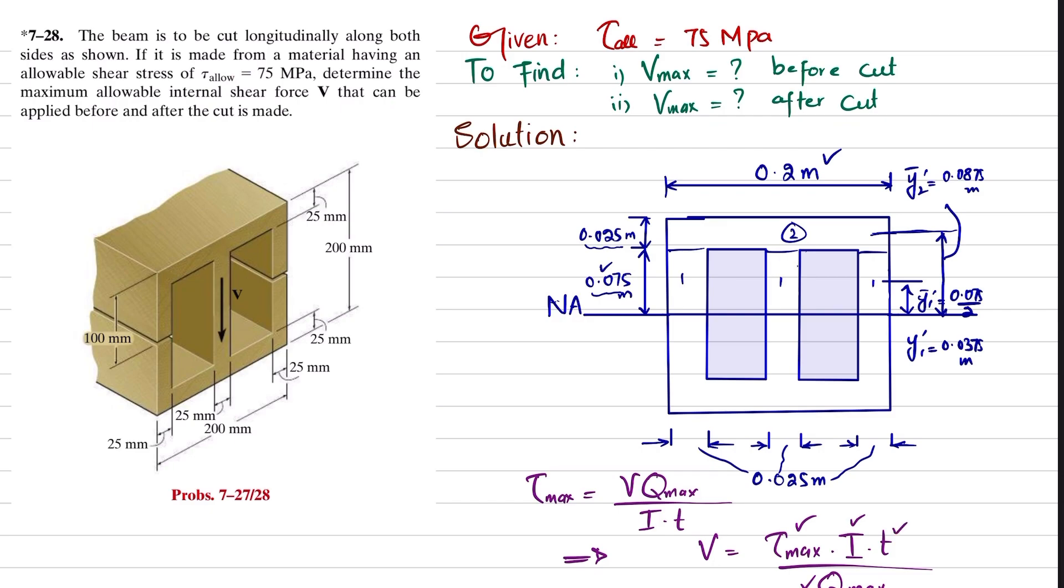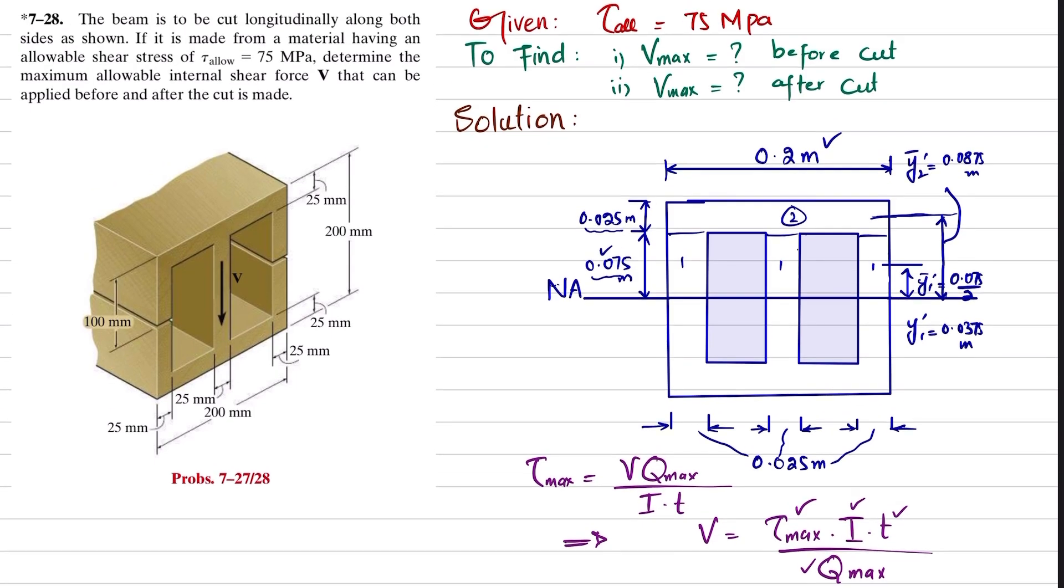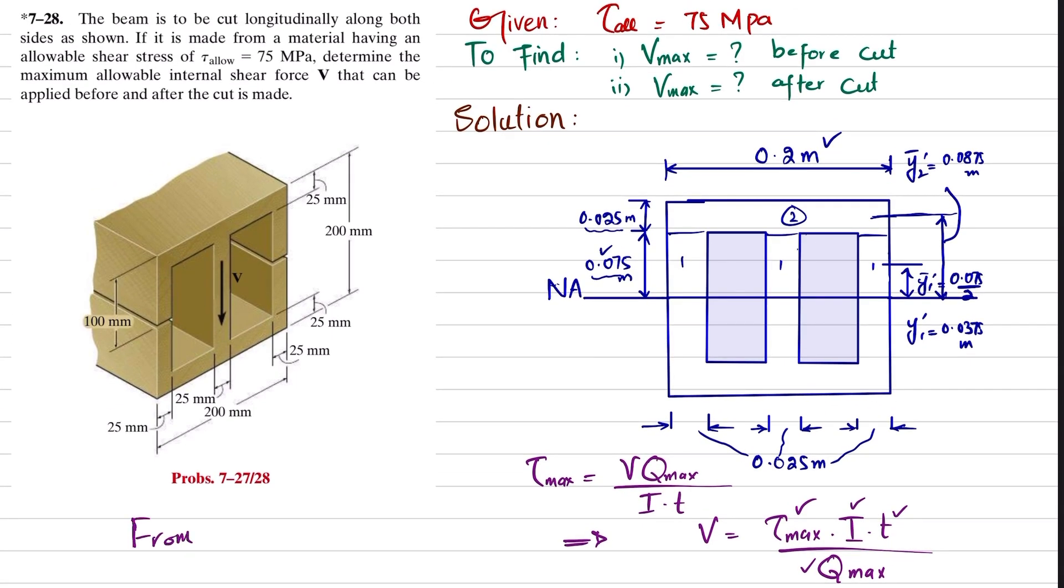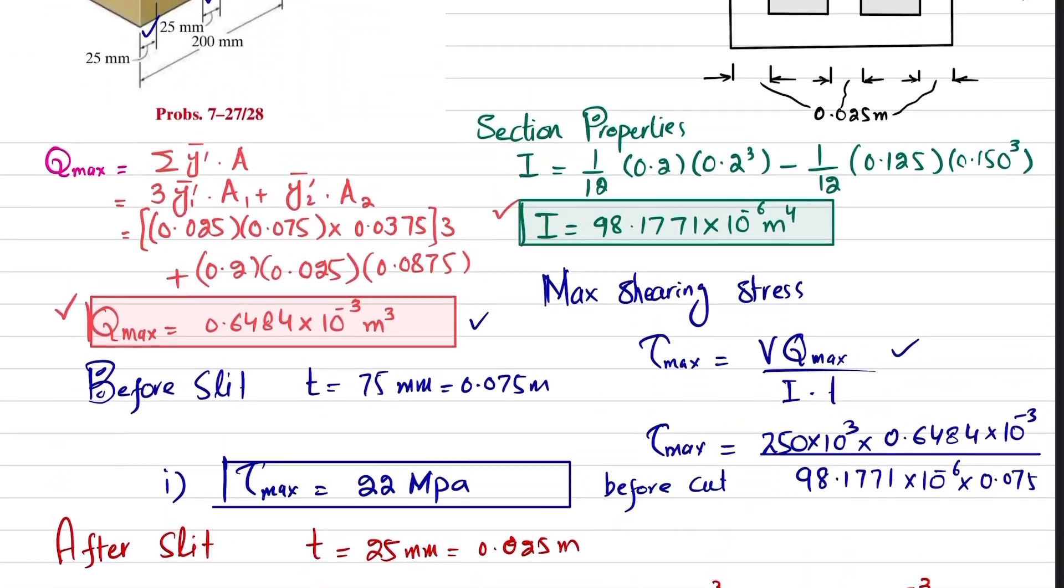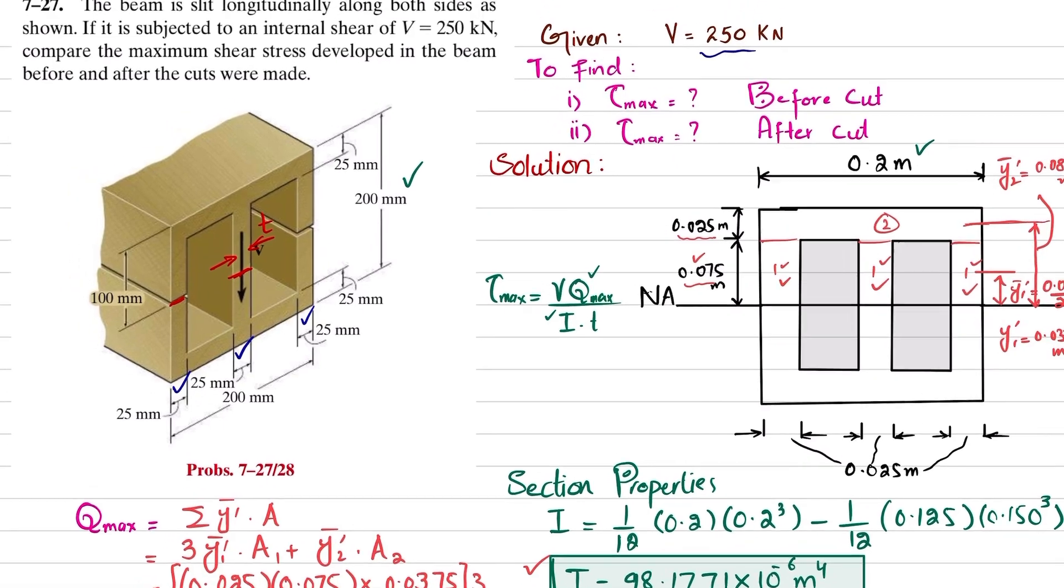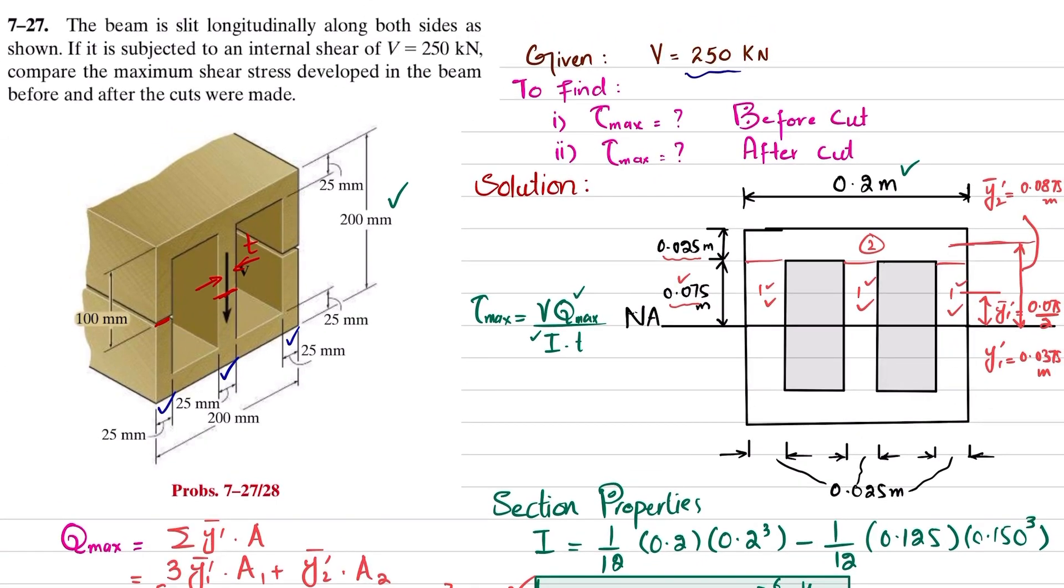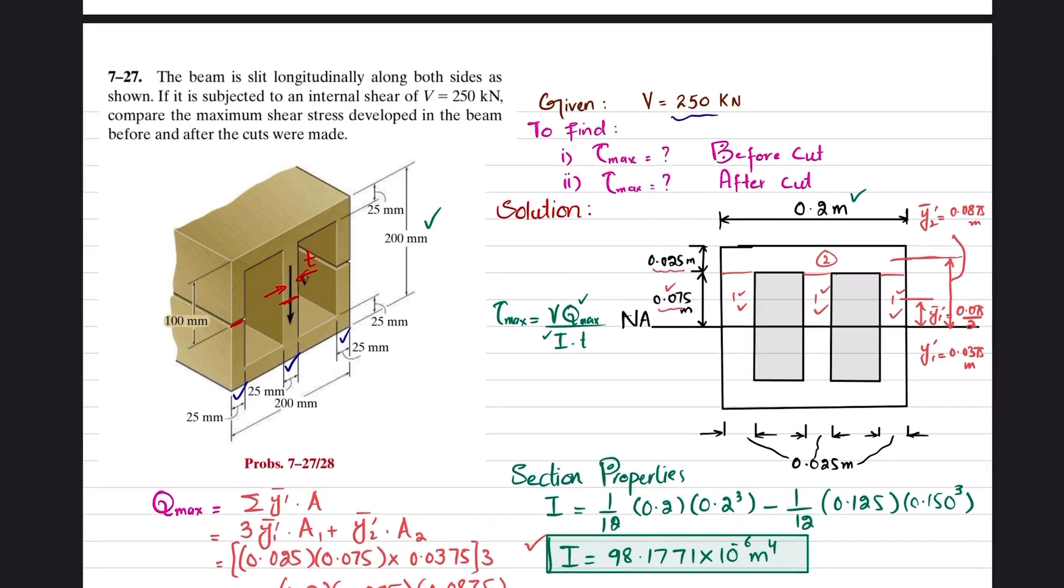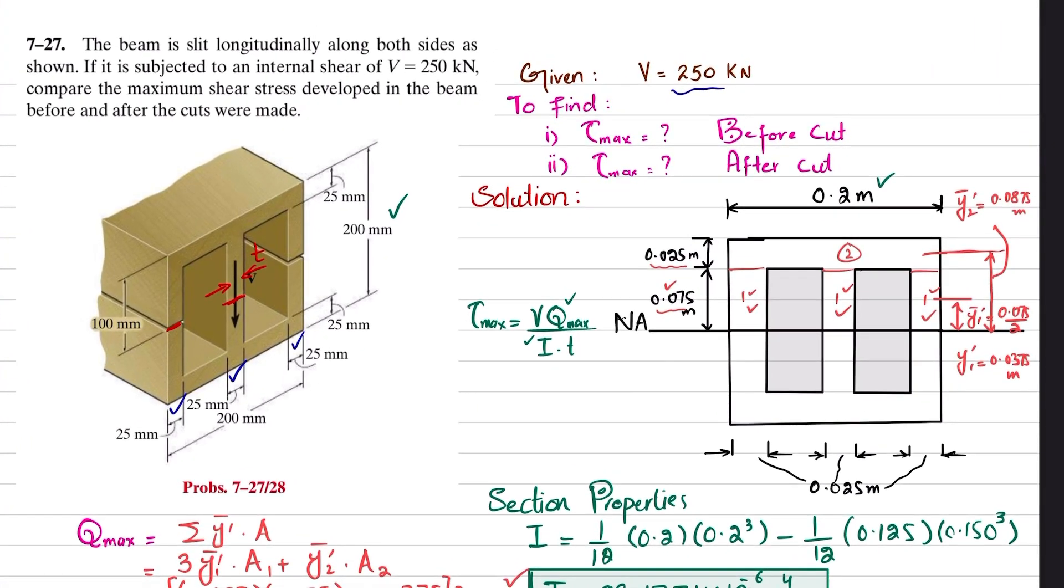From our problem 7-27, which we have solved, we will get the value of I and Q_max from there because that is already explained in detail. If anyone has a problem, he or she can go to problem 7-27 and learn how to find the moment of inertia for this beam and Q_max as well.